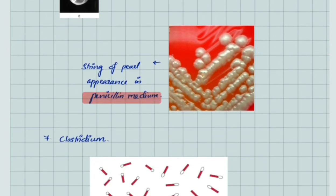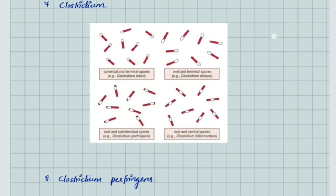In penicillin medium, we see string of pearls appearance of Bacillus anthracis. Clostridium species have different arrangements: in Clostridium tetani the spores are spherical and terminal, giving drumstick appearance. In Clostridium tertium, spores are terminal but oval. In Clostridium perfringens, spores are subterminal and oval. In Clostridium bifermentans, spores are oval and central.